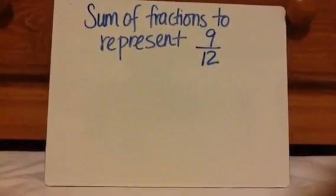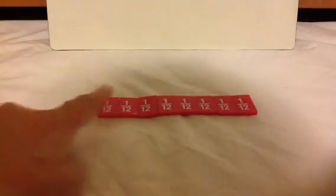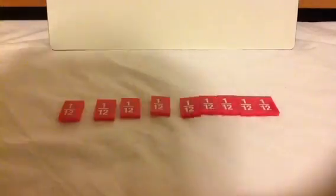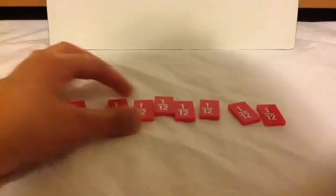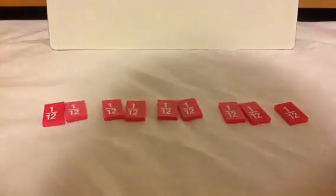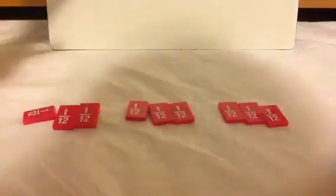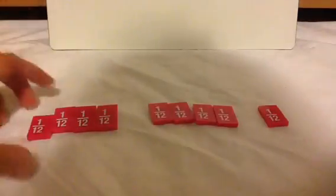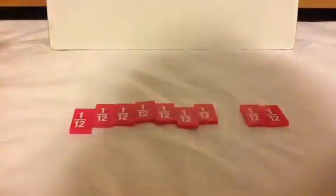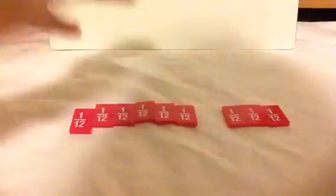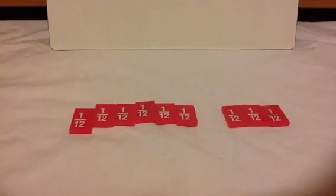So the question is: sum of fractions to represent 9 twelfths. I can do 1 twelfth nine times. Or I can do 2 twelfths plus 2 twelfths plus 2 twelfths plus 2 twelfths plus 1 twelfth. I can do 3 twelfths plus 3 twelfths plus 3 twelfths. I can do 4 twelfths plus 4 twelfths plus 1 twelfth, 5 twelfths plus 4 twelfths, 8 twelfths plus 1 twelfth, 7 twelfths plus 2 twelfths, 6 twelfths plus 3 twelfths — many different ways. If they specifically say unit fractions, then you have to do 1 by 1.